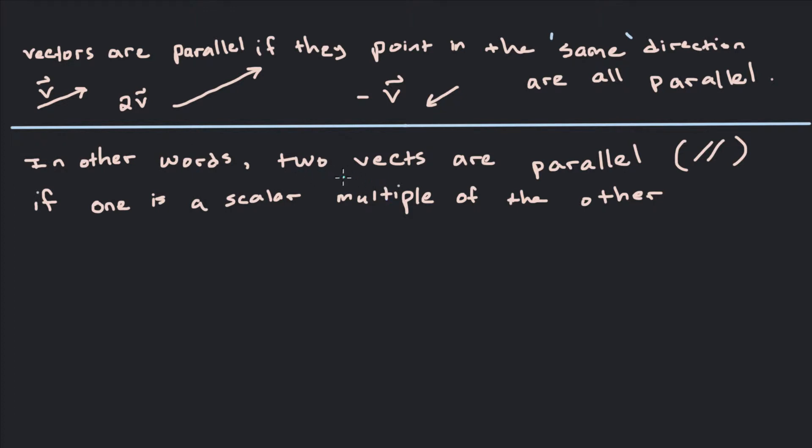So essentially we can boil this down to two vectors being parallel if one is a scalar multiple of the other.